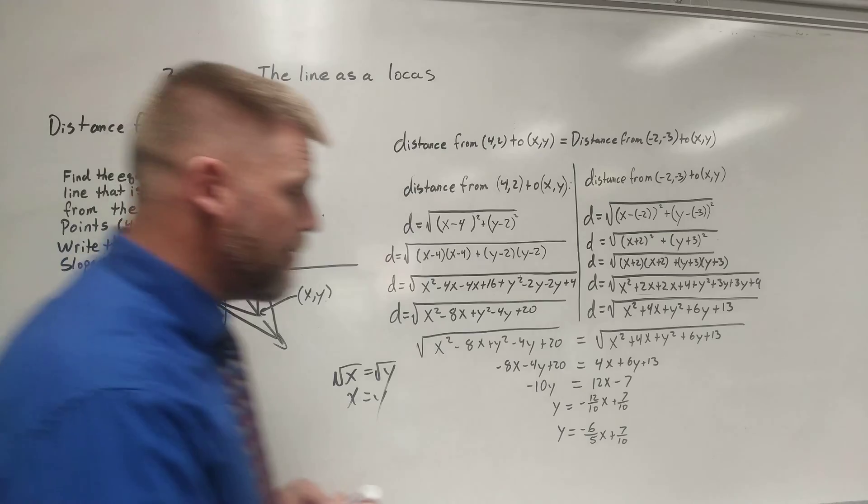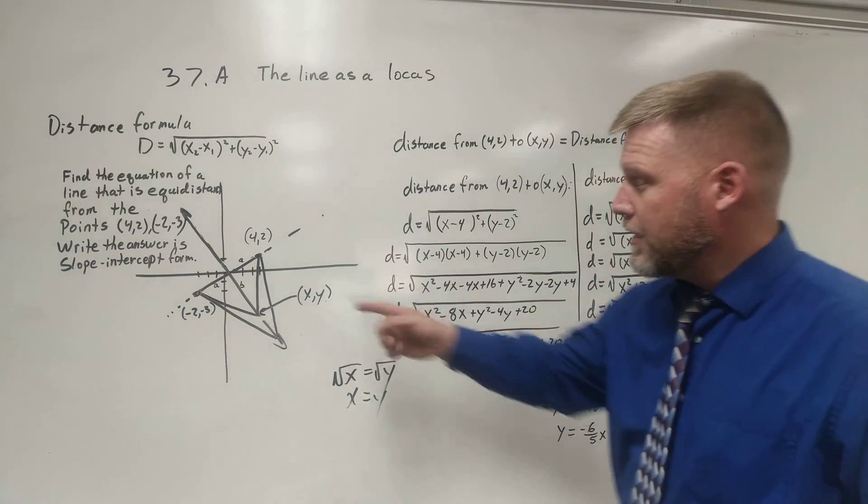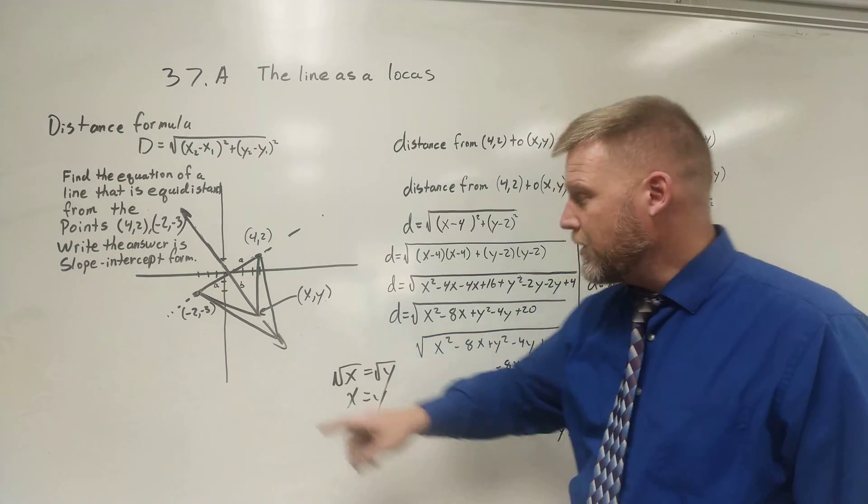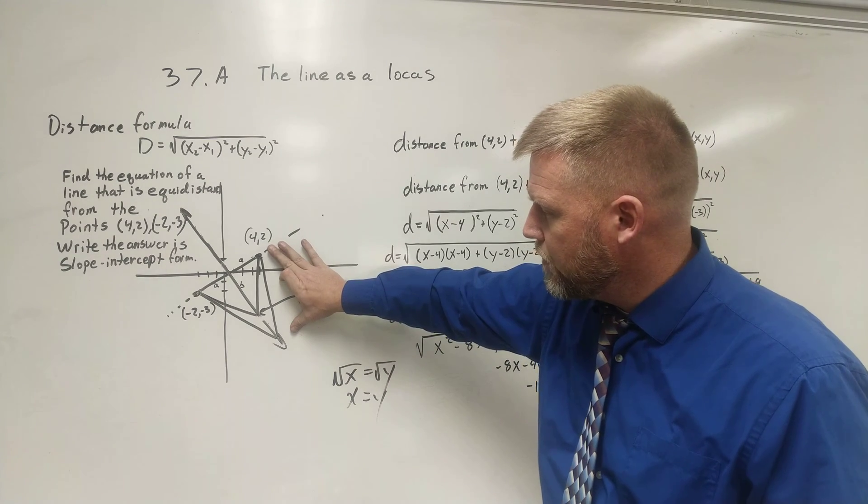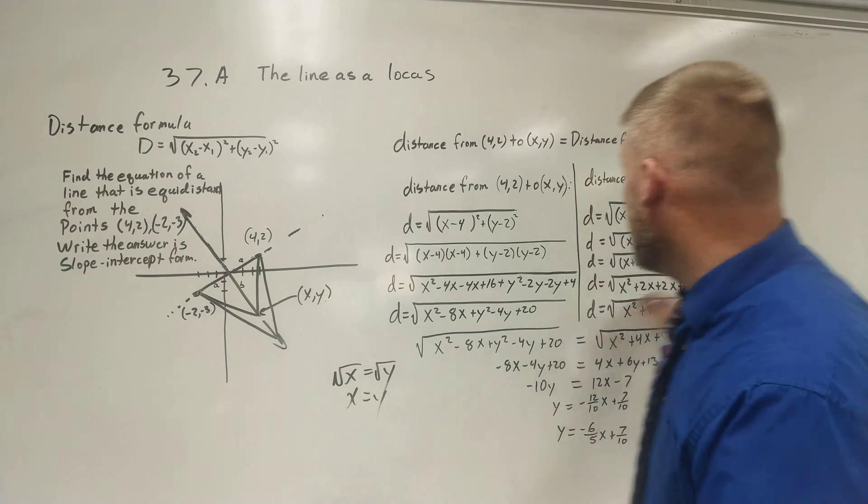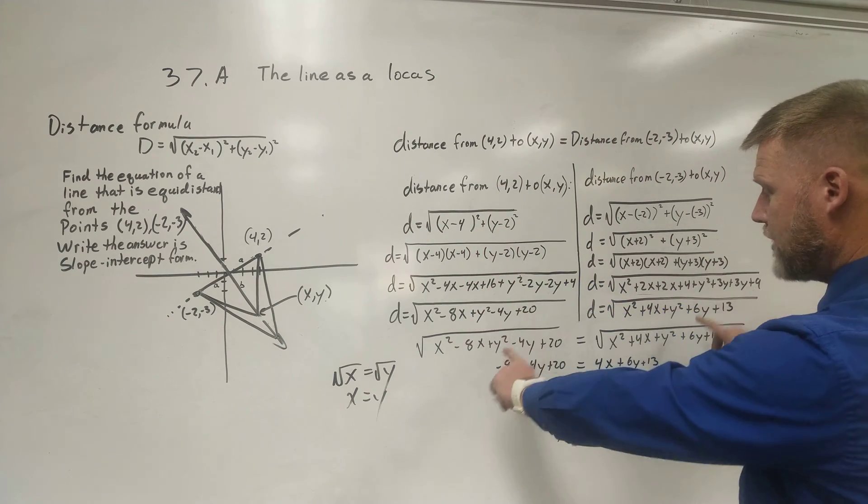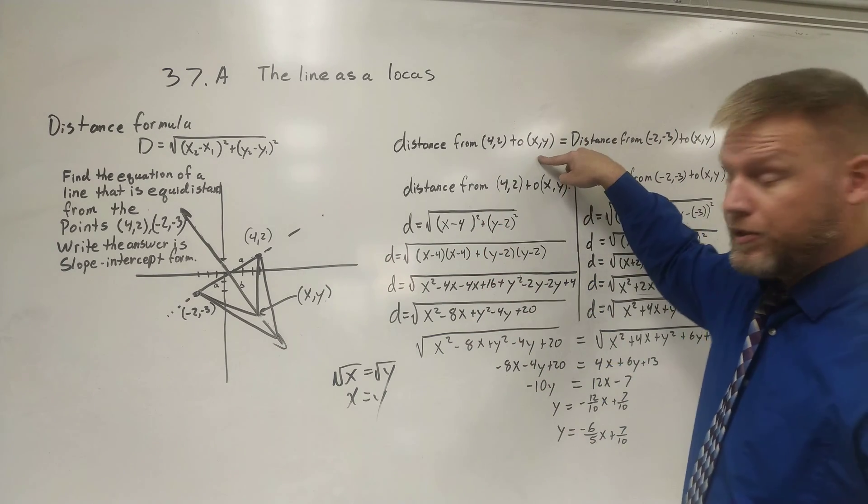So once again, just to recap what we did here, we realized that the distance was the same. So we set them equal to each other. We found the distance from the one point to our unknown, then from our other point to the unknown on both sides. We set them equal to each other because that's where we started.